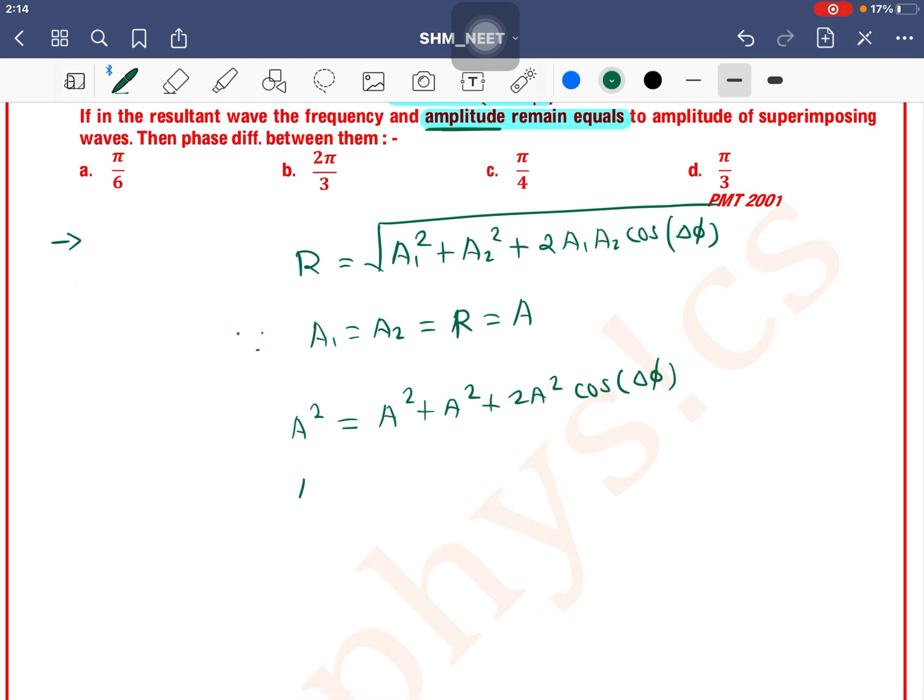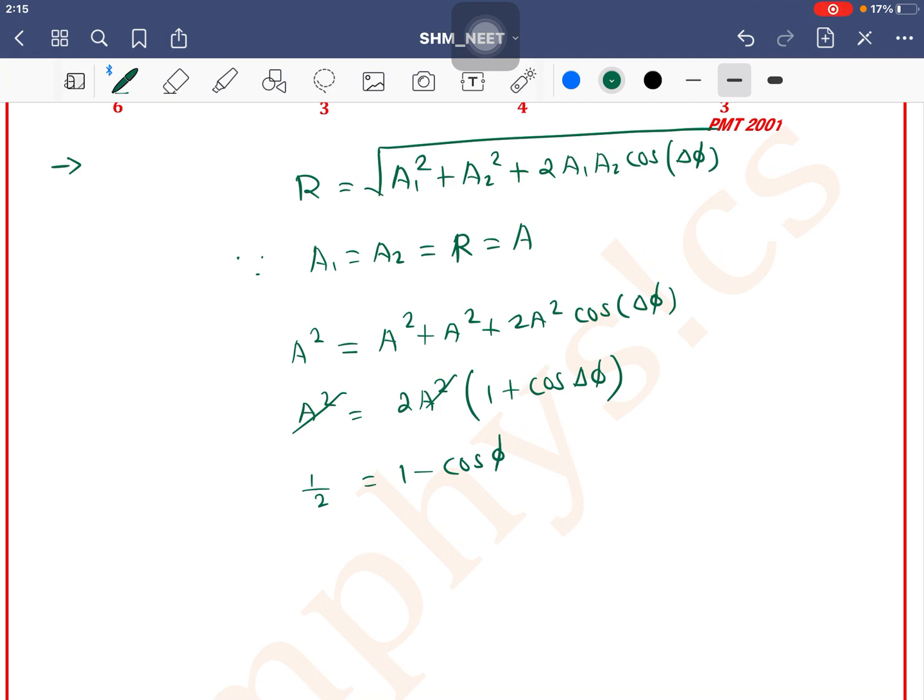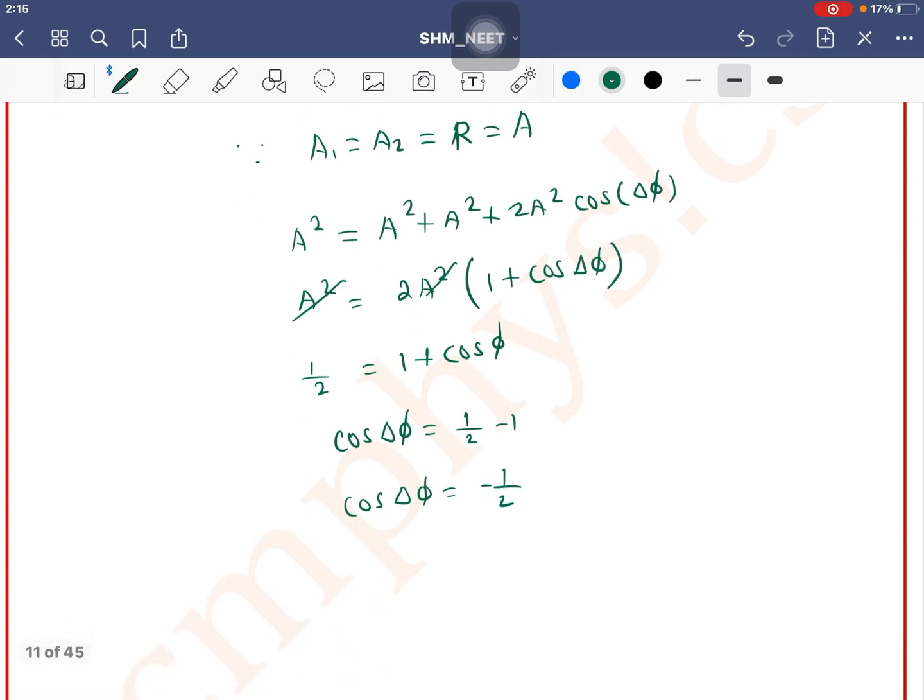A² = A² + A² + 2A² cos(Δφ). Dividing by 2A², we get 1/2 = 1 + cos(Δφ), which gives cos(Δφ) = -1/2. We know that cos(120°) = -1/2, and 120° = 2π/3 radians, so 2π/3 means option B is the correct one.